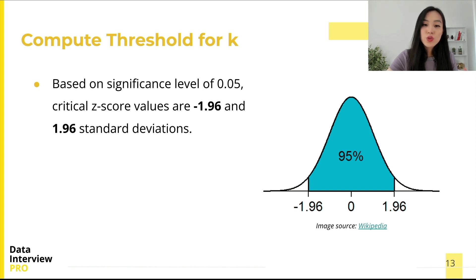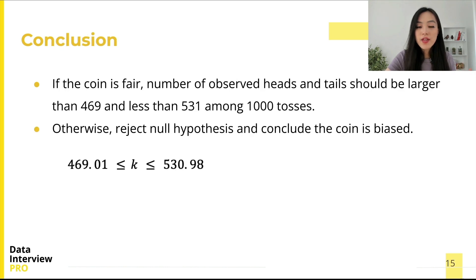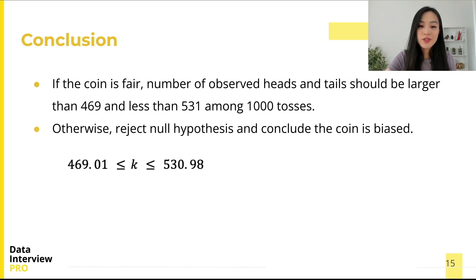Because we are doing a two-sided test, the critical z-score can be a negative or a positive value. We are then able to calculate the threshold for the number of successes and get: k is greater than 469 and less than 531. Therefore, the number of observed heads should be no less than 469 and should not exceed 531 for us to be convinced the coin is fair. This applies to the number of tails as well; otherwise we reject the null hypothesis and conclude the coin is biased.